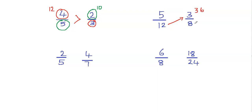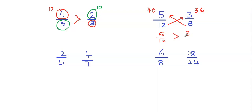Then we're going to multiply the bottom number of this fraction with the top number of the other fraction. So we're going to multiply 8 by 5. 8 times 5 would be 40, so we're going to put 40 next to the numerator 5 that we multiplied. Now we can compare the products. We know that 40 is greater than 36, so that means 5 twelfths is greater than 3 eighths. Or you can say that 3 eighths is smaller than 5 twelfths.